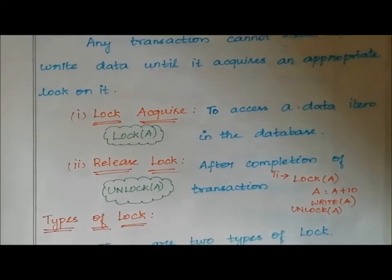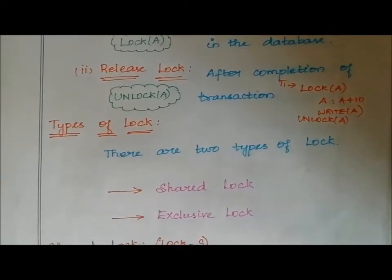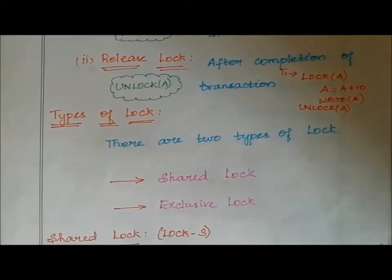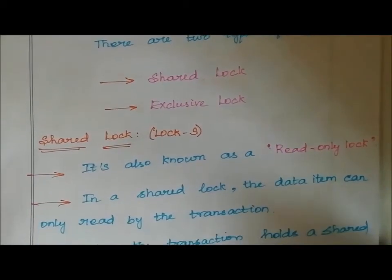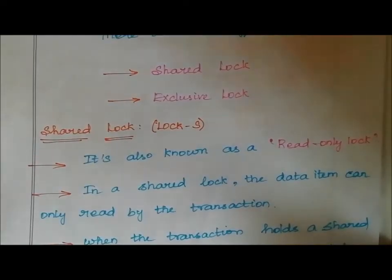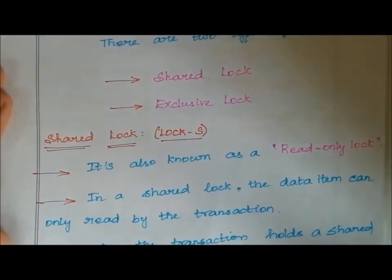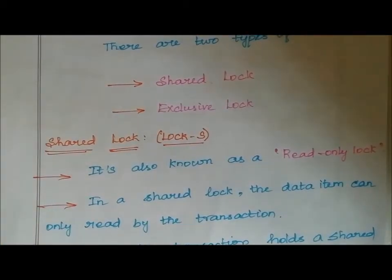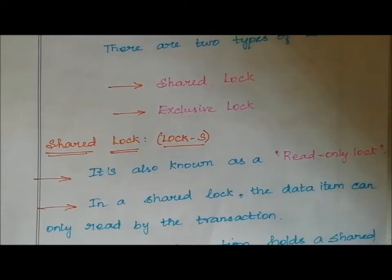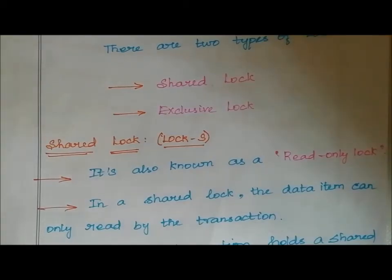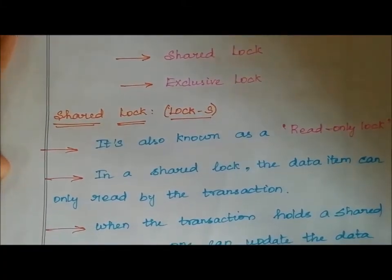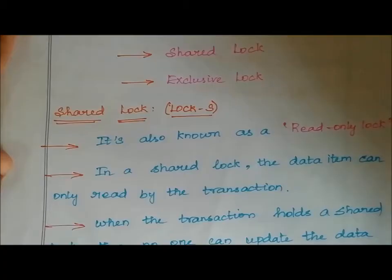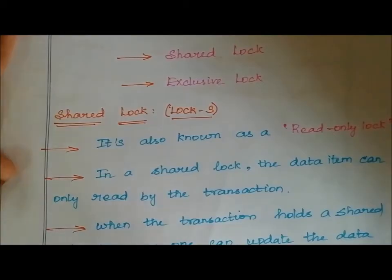There are two types of locks. The first one is shared lock and the second one is exclusive lock. Shared lock is denoted by Lock(S). It is also known as a read-only lock. When a transaction holds a shared lock on a particular data item, it can only read that data item from the database.